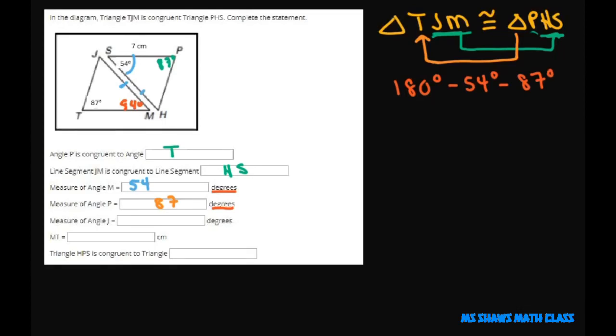So when you do that, you get 180 minus 54 minus 87, and that's going to be 39. So 39 goes here, and this goes 39 as well. So J is 39 degrees.